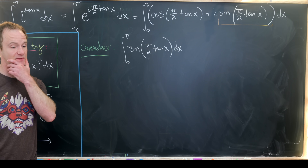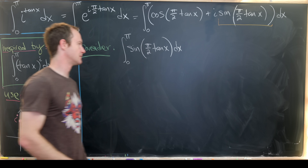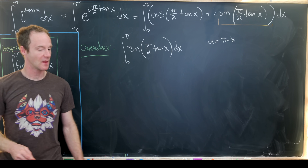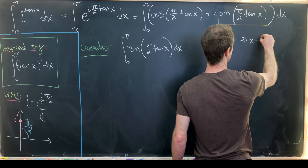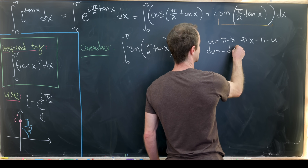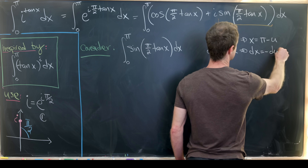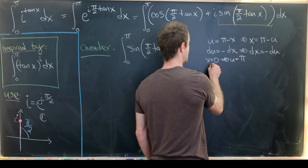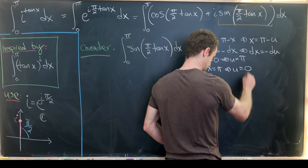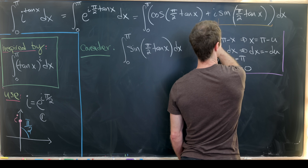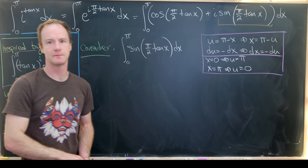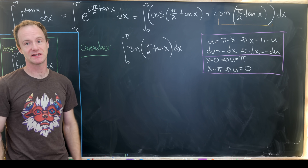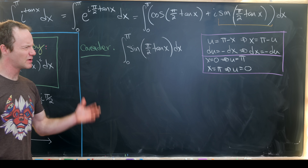We evaluate this by substitution, taking u = π − x. This gives x = π − u, du = −dx, and the bounds change from x = 0 (u = π) to x = π (u = 0). We'll use the classic trick of writing twice the integral — replacing u back with x as a dummy variable — and applying the substitution to one copy.